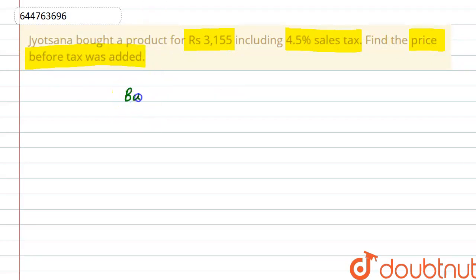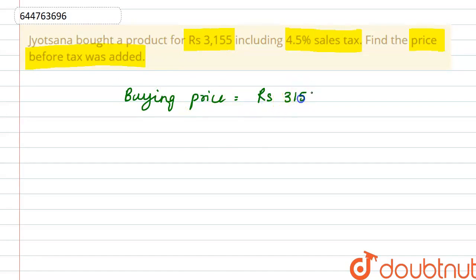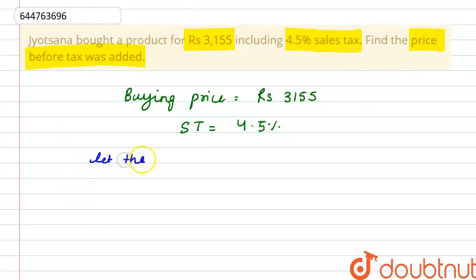The buying price is Rs. 3155, and we have a sales tax of 4.5%, and we have to find the price before sales tax. So let us assume that the price before tax was added is x.